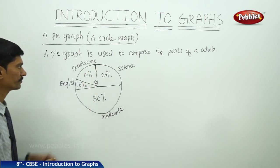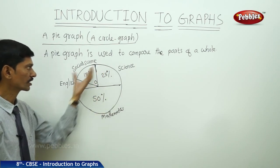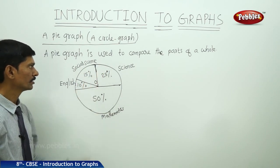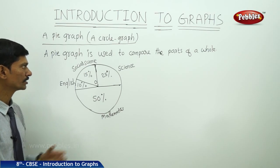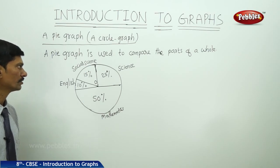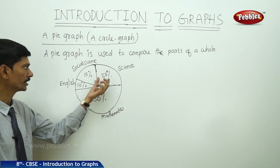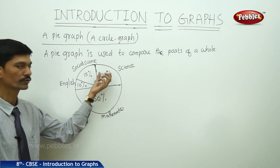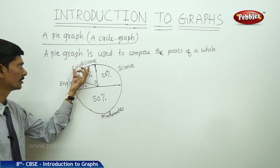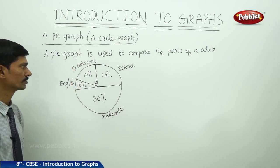In the pie graph or circle graph, the circle is divided into different sectors to show the different categories of the given data. Here, 50% like mathematics, 25% like science, 15% like social studies, and 10% like English. These sectors are the parts of a whole circle.